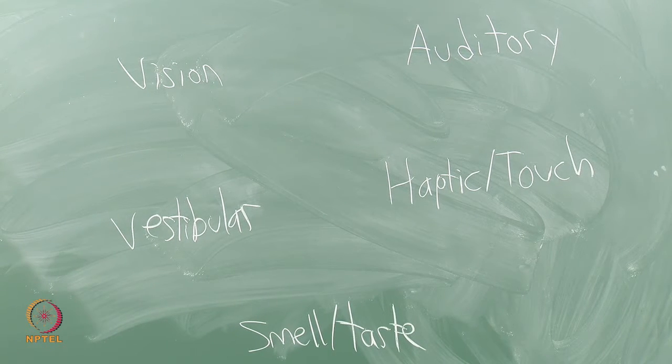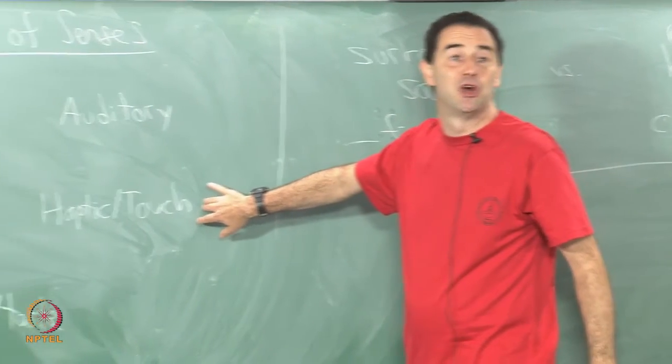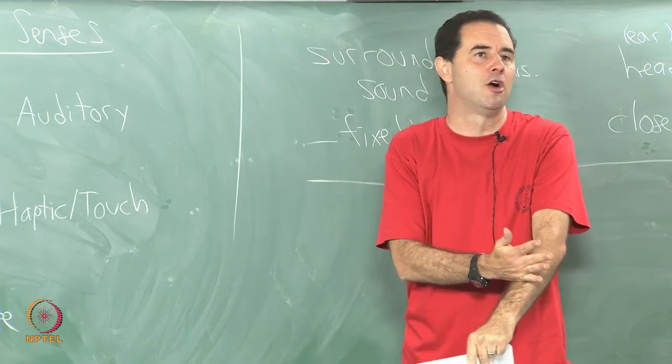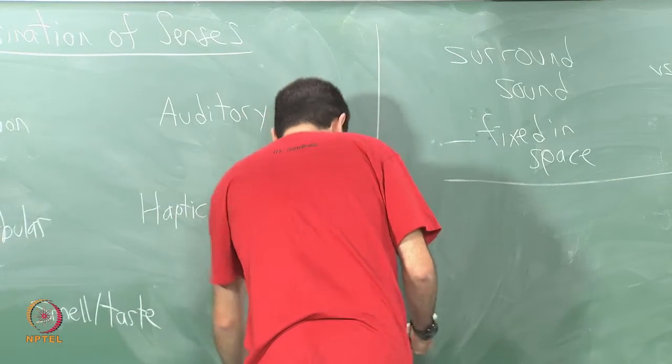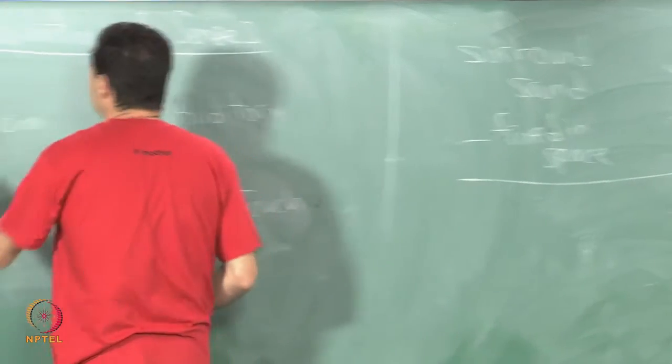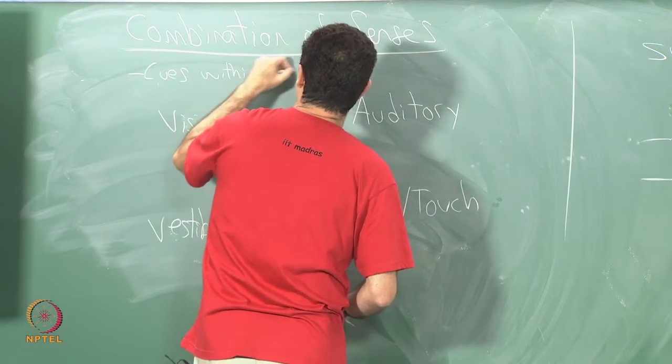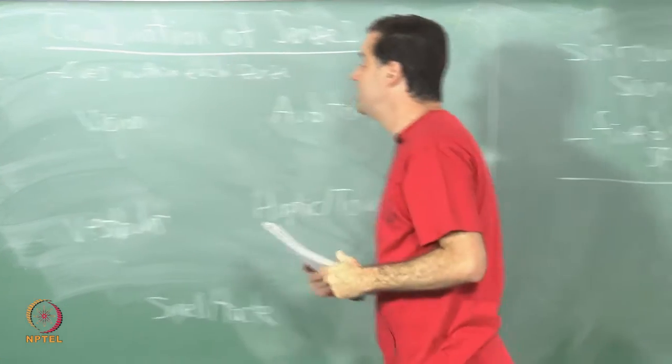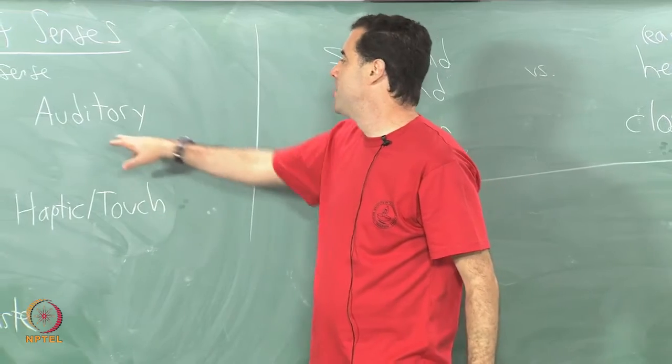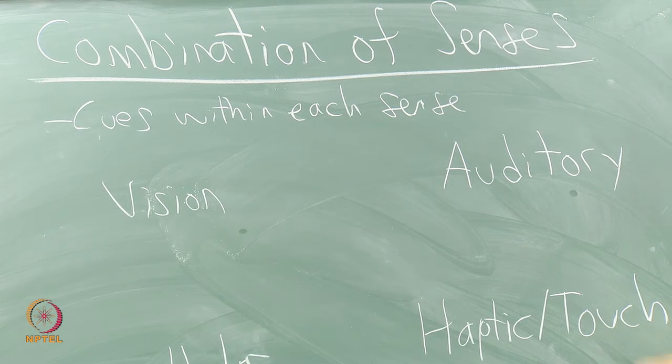In haptic and touch we could include sensing of temperature as well, all sorts of other possibilities - thermal and sensing of forces along our skin in various places. We have all of these senses and within each one of the senses we have cues within each sense. In the case of vision we talked about binocular cues and monocular cues. We had binaural cues and monocular cues in the auditory case.